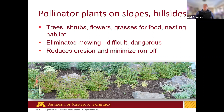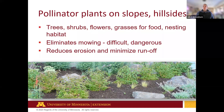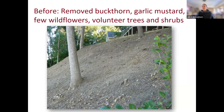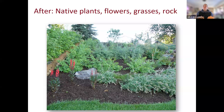Planting pollinator plants on slopes and hillsides is a great opportunity. Rather than mowing a hillside, remove the grass and plant trees, shrubs, flowers, and grasses for caterpillars and nesting habitat. This eliminates difficult and potentially dangerous mowing, reduces erosion, and minimizes runoff because complex root systems hold water. Here's my neighbor's steep hillside — formerly covered in buckthorn, garlic mustard, and volunteer trees — now planted with native flowers, grasses, and boulders. It's really attractive.